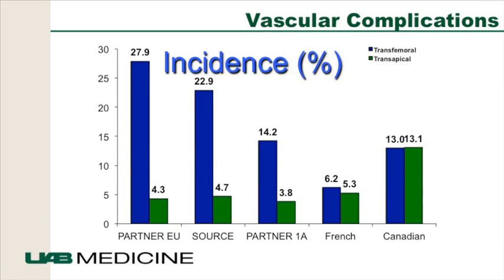Vascular complications appear to be the most common. Looking at all the early trials from the PARTNER EU trials through SOURCE, PARTNER 1, French, and Canadian studies, the incidence of vascular complications appears to be declining. Earlier trials used larger sheath systems; with the advent of 18-French or 16-French sheaths, this is becoming less of an issue. With CT screening of iliofemoral arteries and careful patient selection, it's improving. Vascular complications are more common with the transfemoral approach compared to all other access sites.